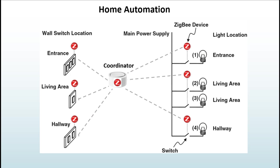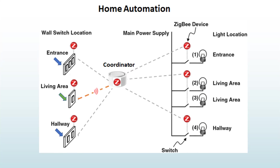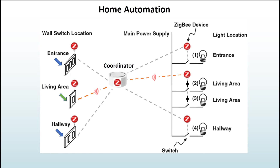Some of the smart home devices that Zigbee supports include lights, door locks, switches, smoke detectors, fans, appliances, and many others. In this diagram, different wall switches control different lights in the house. The wall switches are battery-operated with no electrical wires — switching any of them sends a message wirelessly to the controller, which relays it to the appropriate light bulb.